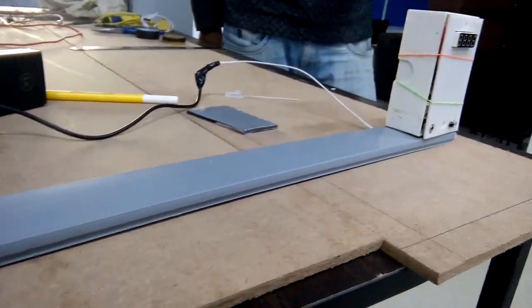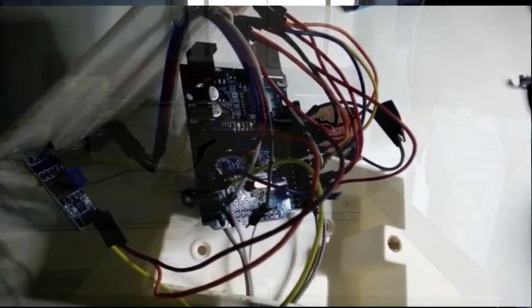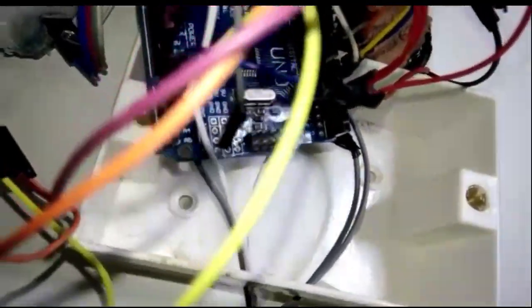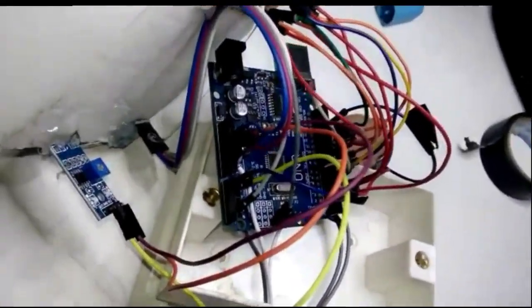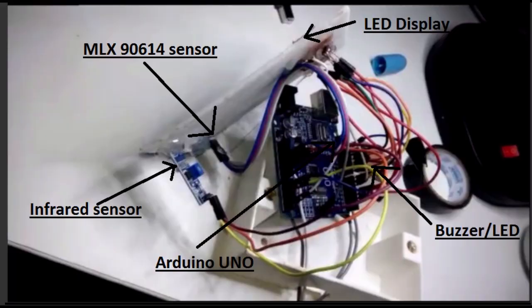It consists of an Arduino UNO, MLX 90614 temperature sensor, two IR sensors, 16 segment display, a buzzer, and LED. Let's see the demonstration.